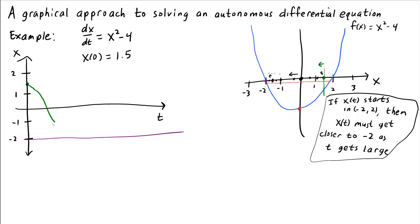Once we cross 0 and reach negative values, dx/dt is still negative, but now x slows down because f isn't quite so negative. As we get closer and closer to negative 2, we slow down because f approaches 0. We have a small value of f, and as time increases we get closer and closer to the special value x equals negative 2. This green curve is a plot of x of t for the initial condition x of 0 equals 1.5.